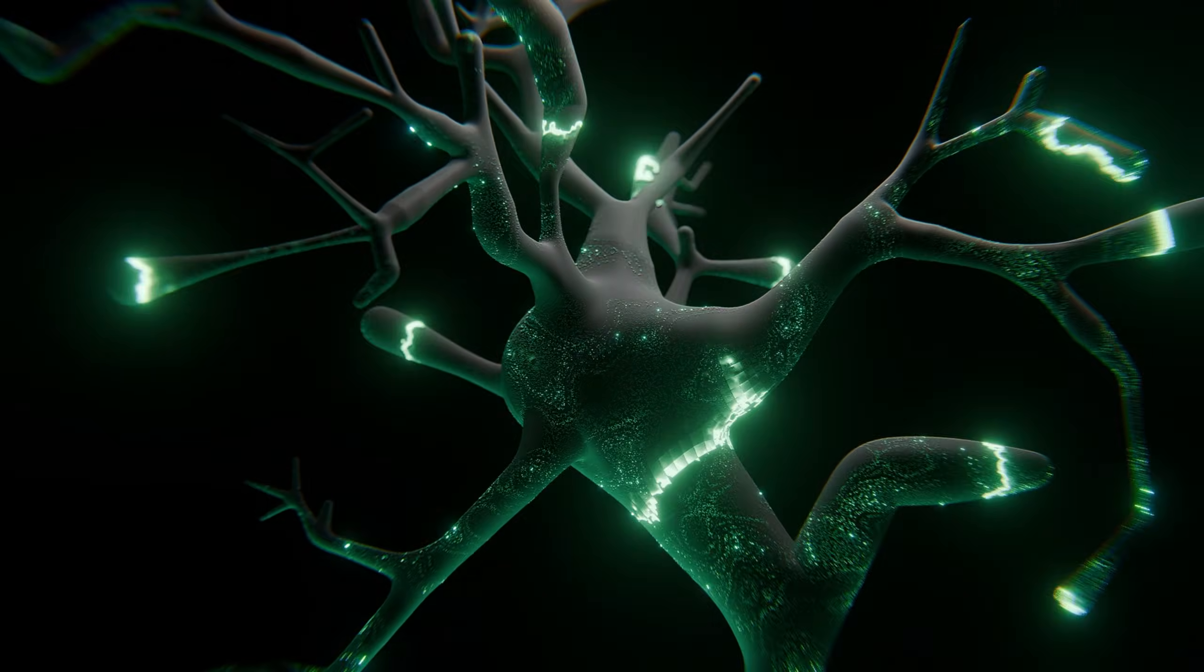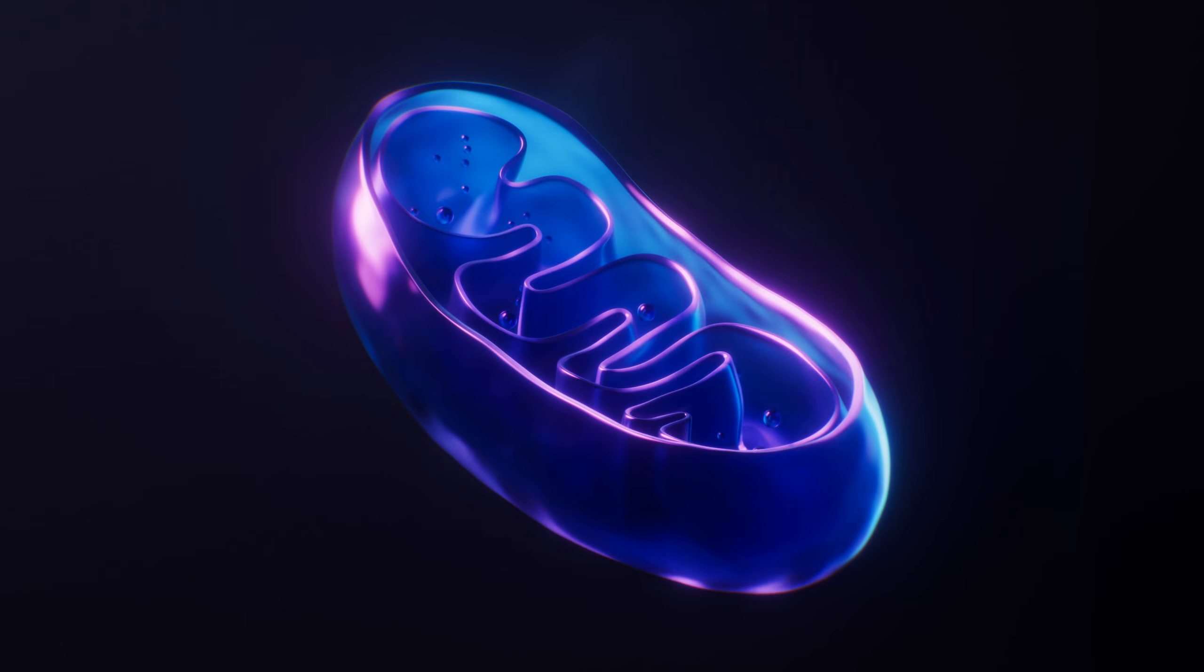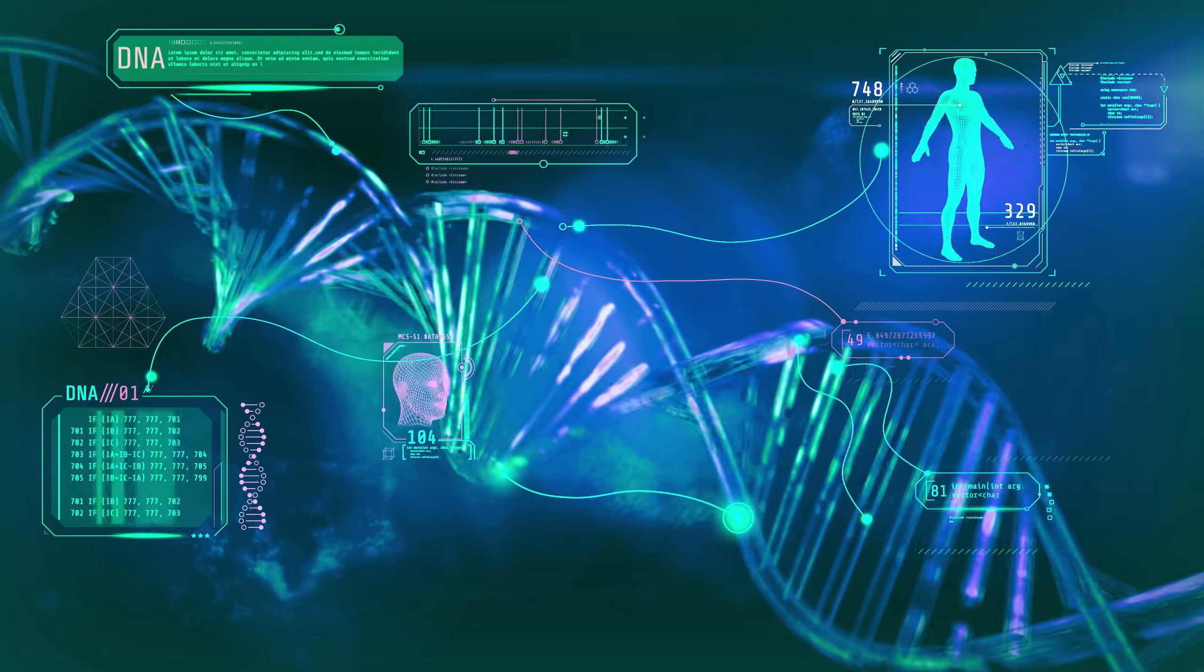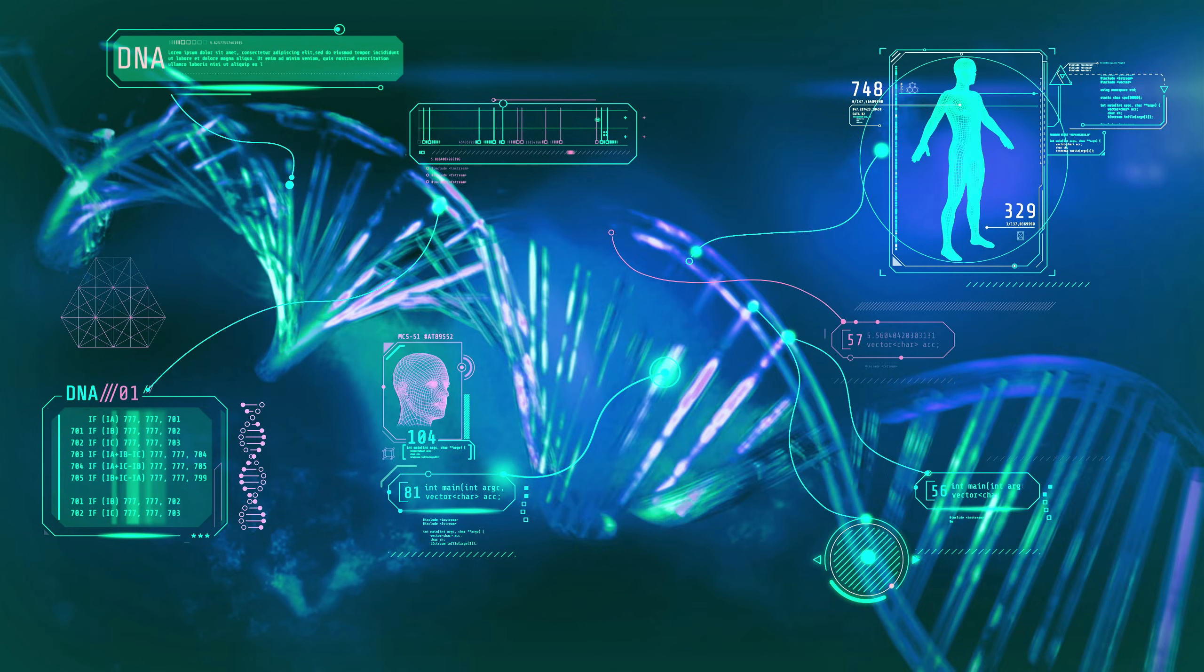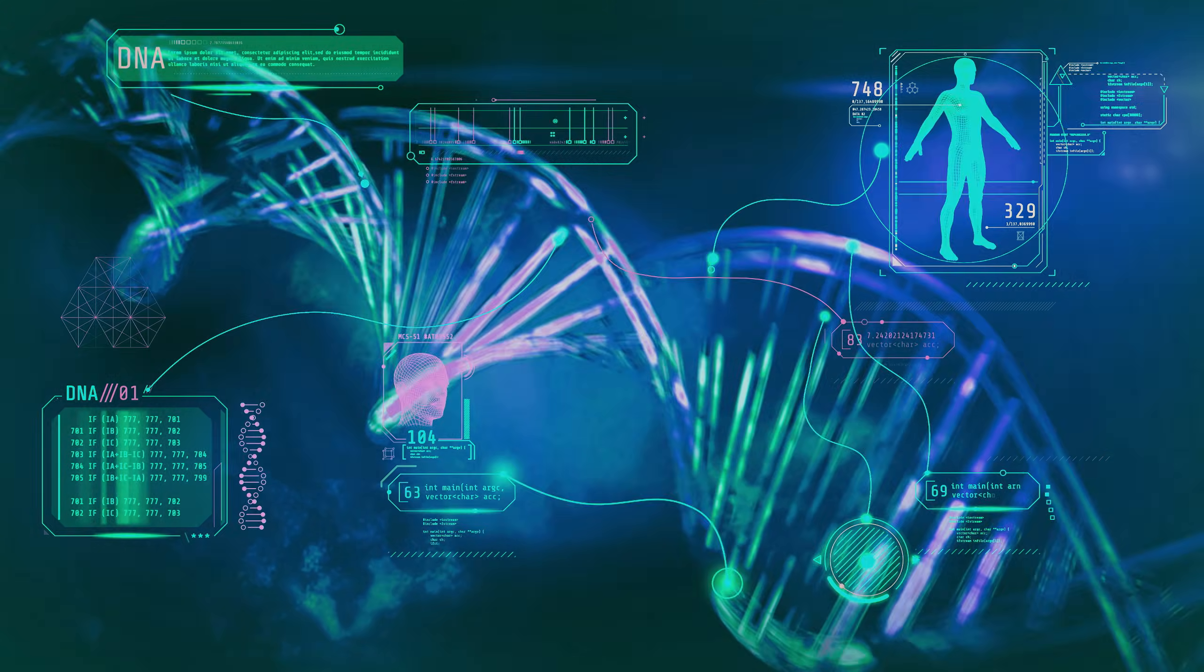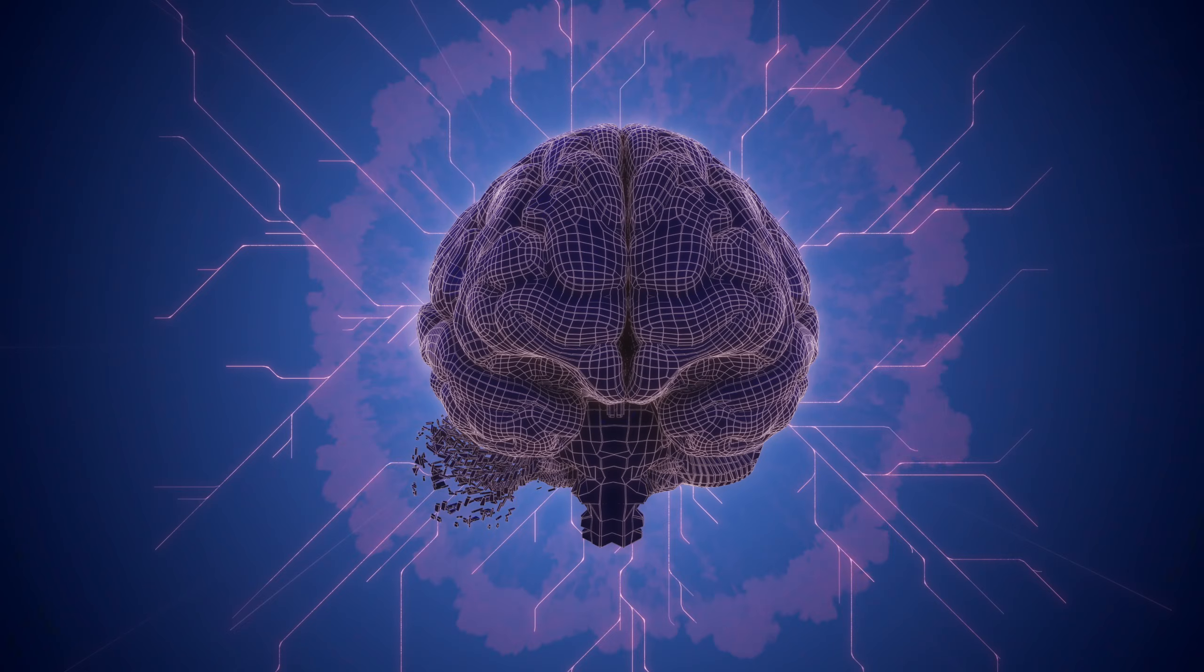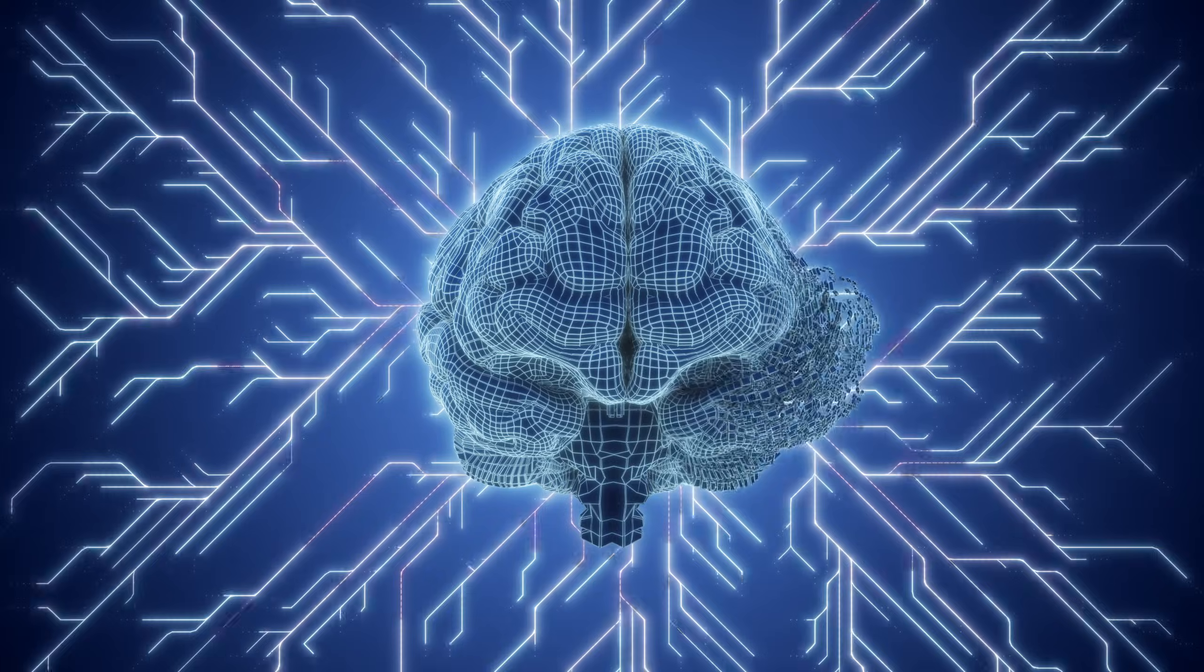It commands neurons to build new connections. When mitochondria produce excess ATP, they signal your DNA: we have surplus energy, time to build. Your hippocampus, the brain's learning center, responds by growing new pathways between neurons.